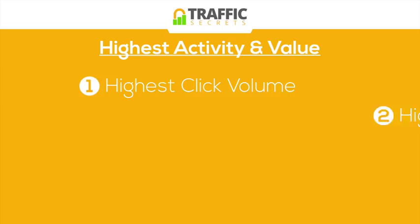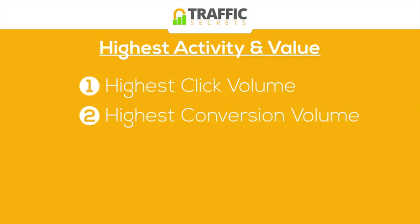The second thing I look for is highest conversion volume. Certain keywords get a lot of conversions — opt-ins at a much higher rate or even sales at a much greater rate — than other keywords that may get more clicks. If that's the case, we want to put focus on those as well, extrapolating them into their own ad groups. A lot of managers only look at clicks, but I think that's a mistake. High conversion volume is a high-value signal.